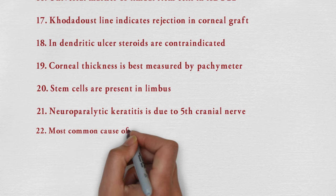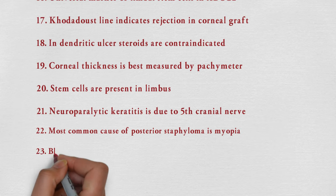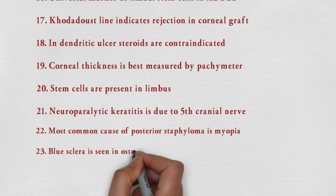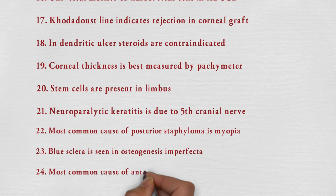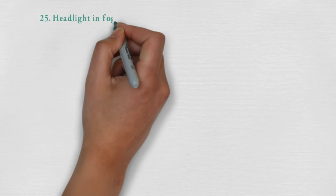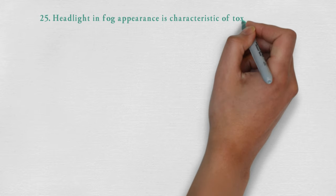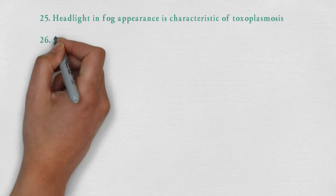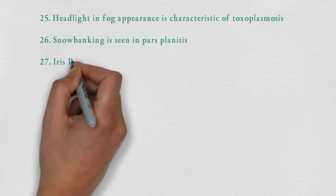Most common cause of posterior staphyloma is myopia. Blue sclera is seen in osteogenesis imperfecta. Most common cause of anterior staphyloma is corneal ulcer. Headlight-in-fog appearance is characteristic of toxoplasmosis. Snow banking is seen in pars planitis.